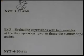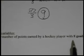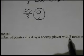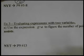G plus A to figure the number of points earned by a hockey player with 8 goals and 12 assists. So we got 8 goals and 12 assists. So what do you think the G and the A stand for?